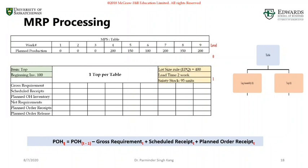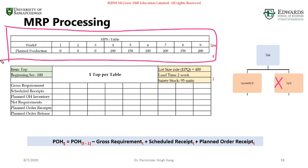Now let's look into part two — to generate an MRP plan for the table top, which is the second component for our table. At level zero we start with the parent item. You are given the master production schedule for the table, and here we are dealing with the item 'top'. The beginning inventory is given as 100 units.